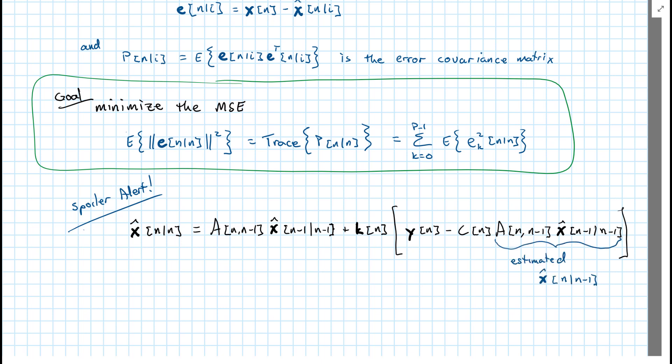So to recap, that quantity A n comma n minus 1 times x hat n minus 1 given n minus 1 is our estimated x at time n given the observations up to time n minus 1. So then this is our estimated or predicted observation.